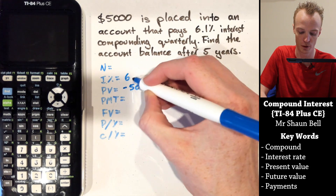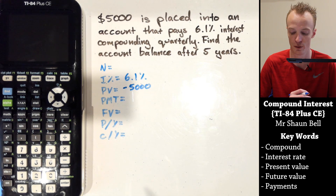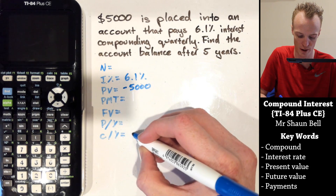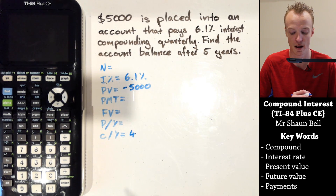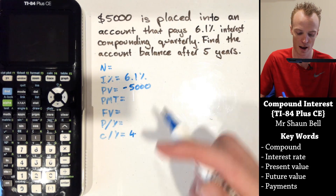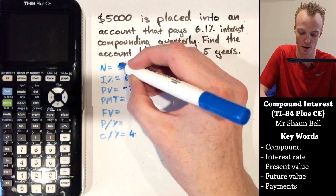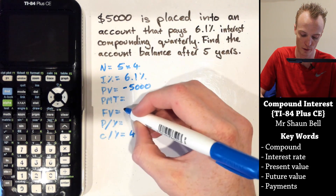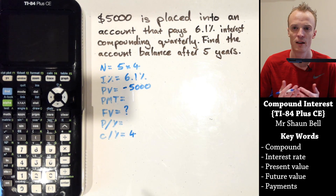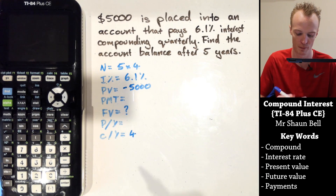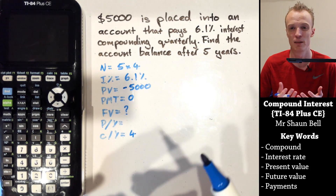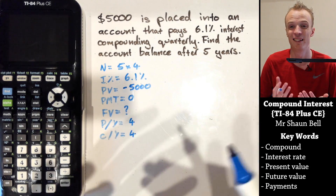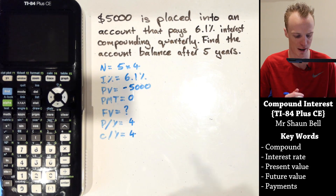The interest rate is 6.1% — input as a percentage, not a decimal. It's compounding quarterly, so four times per year, meaning C/Y equals four. For N: five years multiplied by four compounds per year gives us 20. We want to find the account balance, which is the future value — marked with a question mark. Payments per term is zero since we're not contributing extra, and P/Y stays the same as C/Y at four.